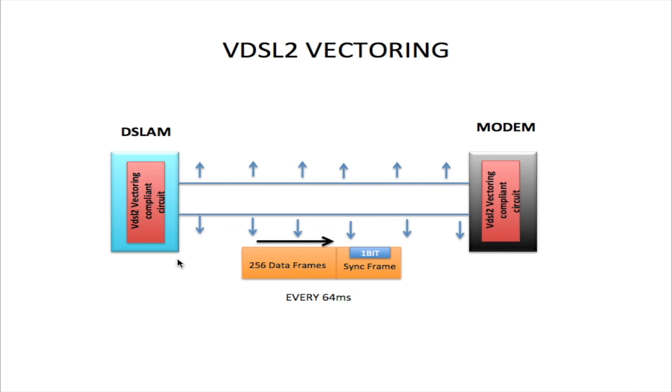Each and every 64 milliseconds, 256 data frames are sent out from the DSLAM to the modem. Attached to the DSLAM is a sync frame, and this sync frame is used to synchronize this data between the DSLAM and the modem. Attached to the sync frame is one bit, and this one bit collects crosstalk information from the line.